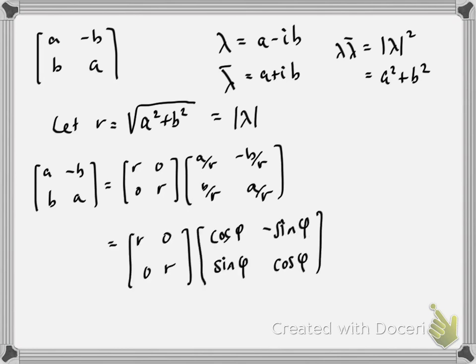This tells me that this has the shape of a rotation matrix. So there's an angle φ such that [a/r -b/r; b/r a/r] can be expressed as [cos φ -sin φ; sin φ cos φ], for some angle φ.